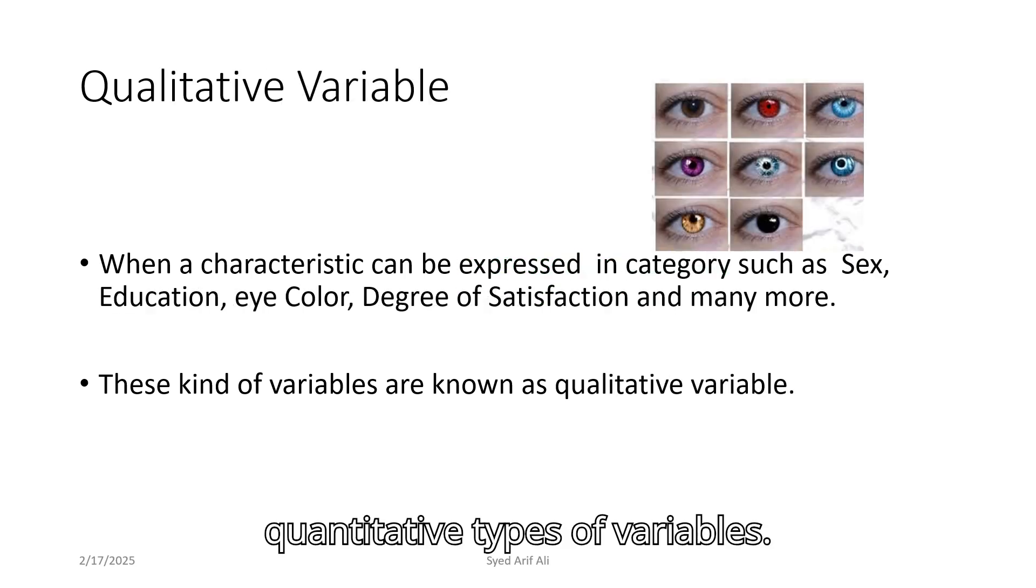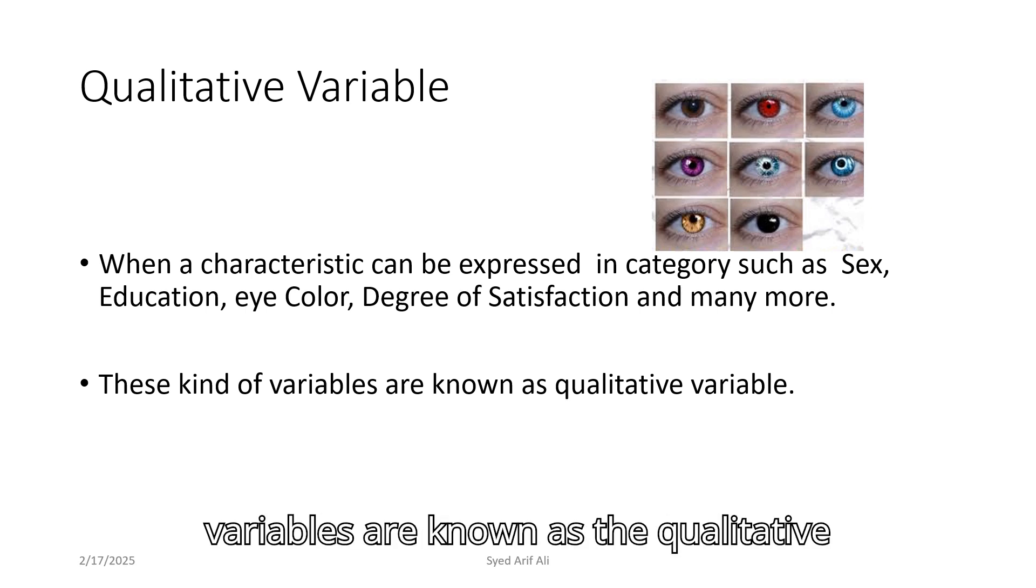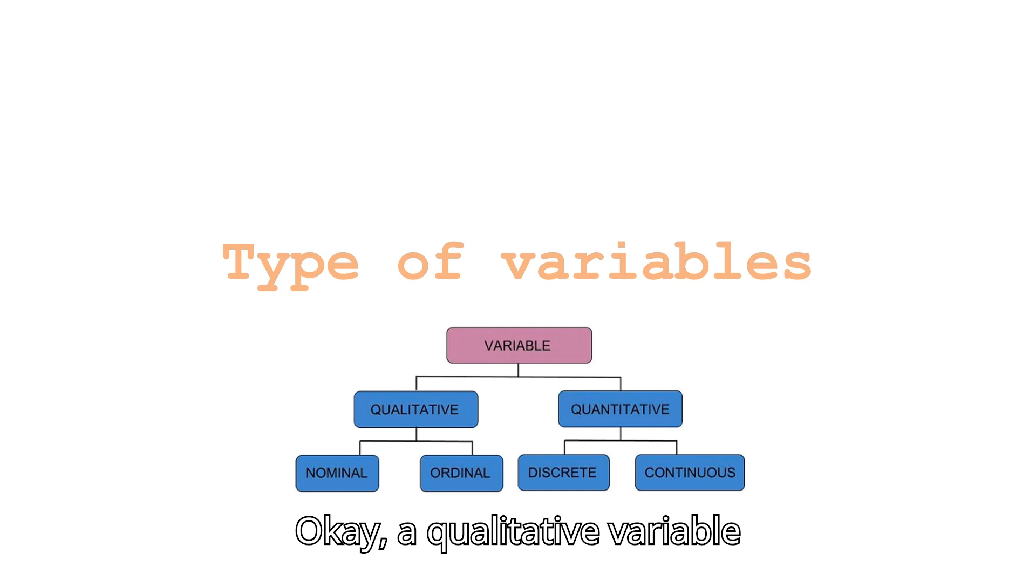Qualitative variables are when a characteristic can be expressed in categories, such as sex, education, eye color, degree of satisfaction, and many more. These kinds of variables are known as the qualitative types of variables.